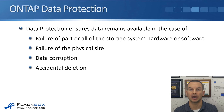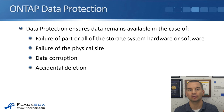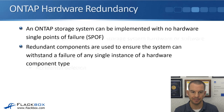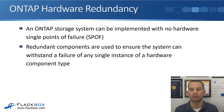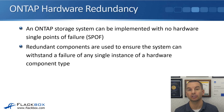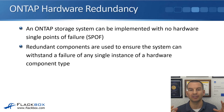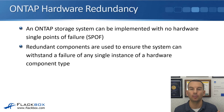Other things that could happen are data corruption or accidental deletion. If either of those things happen, you want to be able to get the data back in the good state it was in before. Starting off with hardware redundancy: an ONTAP storage system can and usually is implemented with no hardware single points of failure. Redundant components are used to ensure that the system can withstand a failure of any single instance of a hardware component type, protecting against a single point of failure.